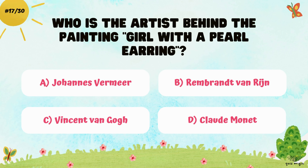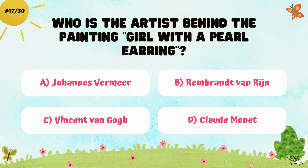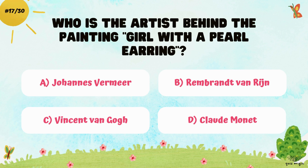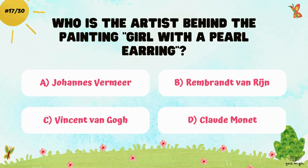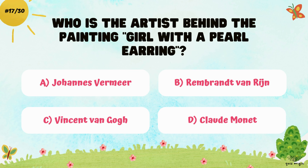Who is the artist behind the painting Girl with a Pearl Earring? A. Johannes Vermeer, B. Rembrandt van Rijn, C. Vincent van Gogh, and D. Claude Monet.